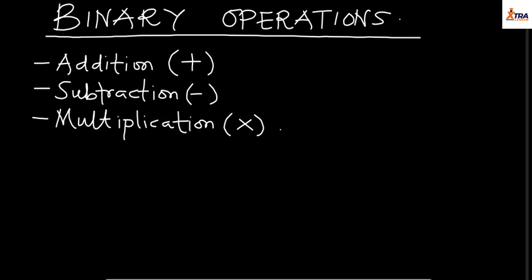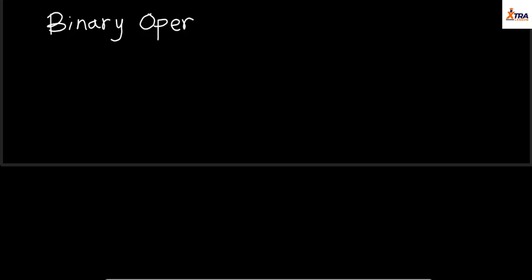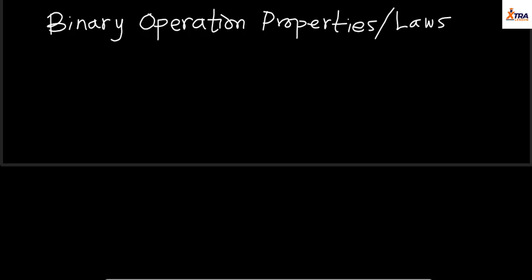We need to understand that for each binary operation there are properties that we actually consider. Every other binary operation will involve combining each of these operations — addition, subtraction — to form another operation on its own. The properties we're considering are called the binary operation properties, or binary operation laws. The very first one we talk about is the closure property.